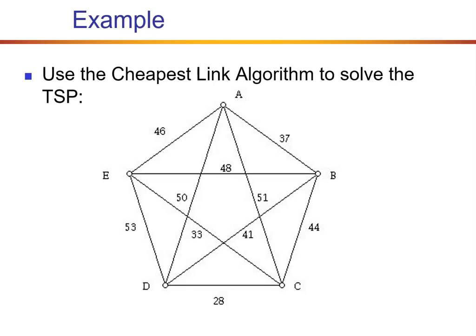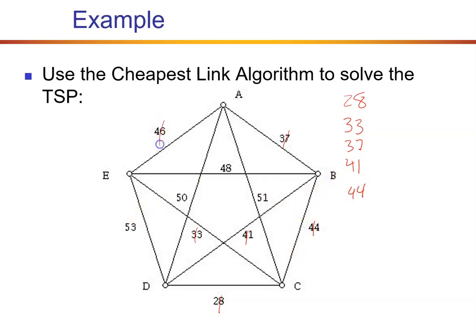This is the third method — the cheapest link. Step one: list all the weights from smallest to largest. So: 28, 33, 37, 41, 44, 46, 48, 50, 51, 53. We will start with the smallest edge. Then pick the next cheapest link and mark it. Continue choosing the cheapest link every single time, but we can never close a circuit and we can never place three edges at a vertex.